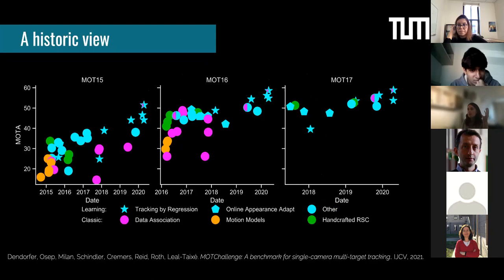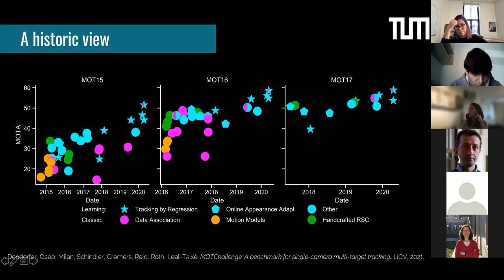With tracking by regression, the research landscape changed significantly. Looking at all the works that sparked this trend starting in 2018–2019, plotting performance on the y-axis and years on the x-axis, we can see that performance really increased with these new tracking-by-regression paradigms, represented by stars on the plot. We really pushed the field forward.